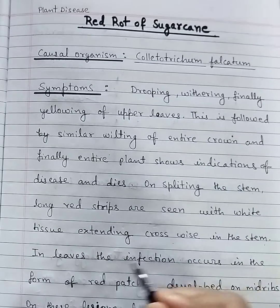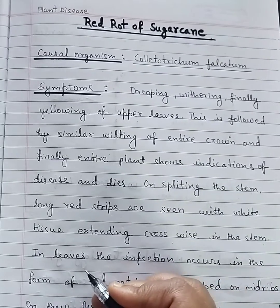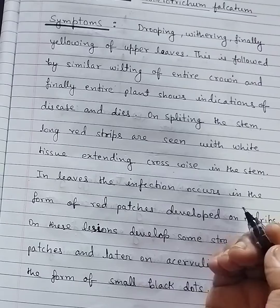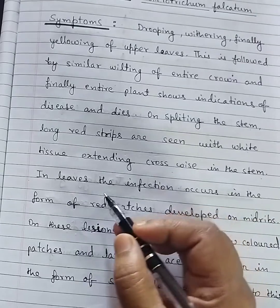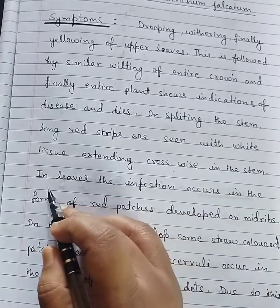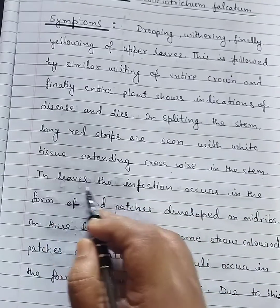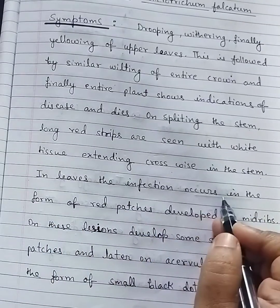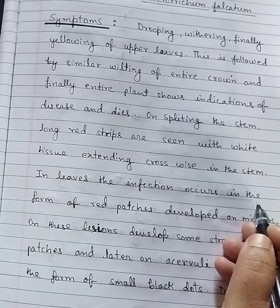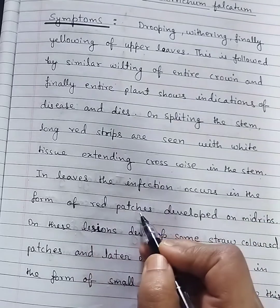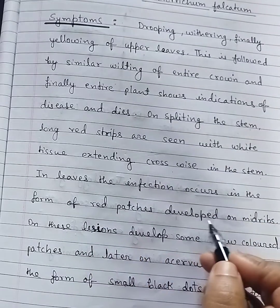On splitting the stem, long red stripes are seen with white tissues extending crosswise in the stem. In the leaves, the infection occurs in the form of red patches developed on the midribs.